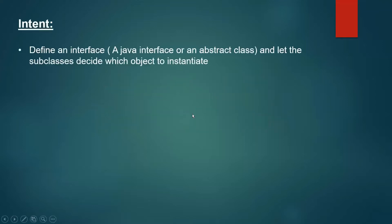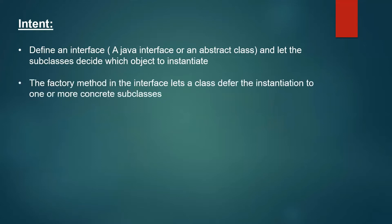Let's start with the intent of this design pattern. We first define an interface or an abstract class, and then let the subclasses decide which object to instantiate. We define a method in the interface or the abstract class called a factory method, which lets a class defer the instantiation to one or more concrete subclasses.